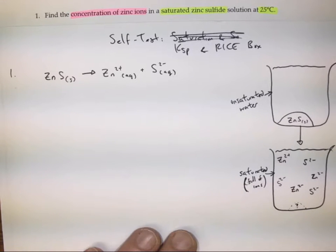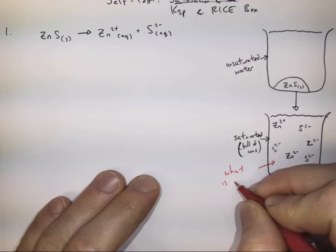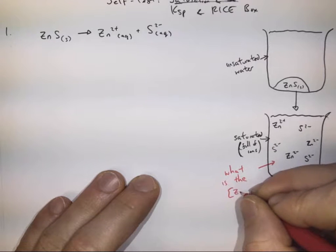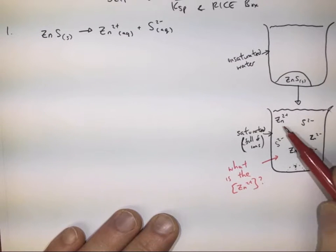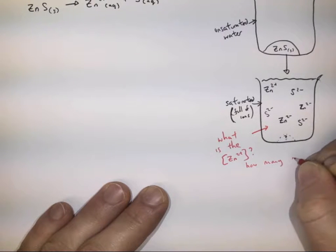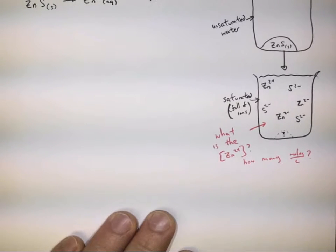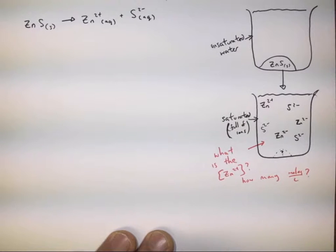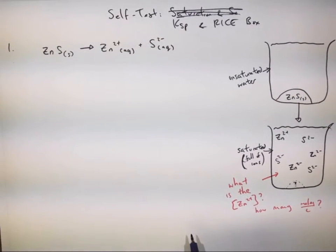We want to know the concentration of zinc ions — that's what's required. How many moles per liter? That's how we're going to measure concentration. There are other ways to measure concentration, like grams per liter, percentage, parts per million, parts per billion, but in this class we like to focus on moles per liter.